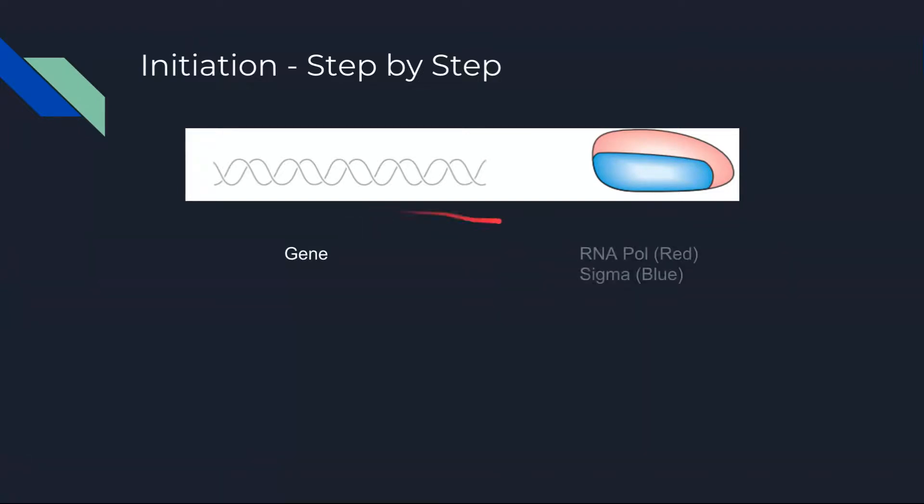We begin with the gene and the enzyme RNA polymerase. As we can see, the enzyme has a component attached to it called the sigma factor, here in blue. This factor is responsible for identifying specific sequences called promoters in the gene so that it can begin transcription. As such, we consider sigma to be the specificity factor as it directs RNA polymerase to start transcription.